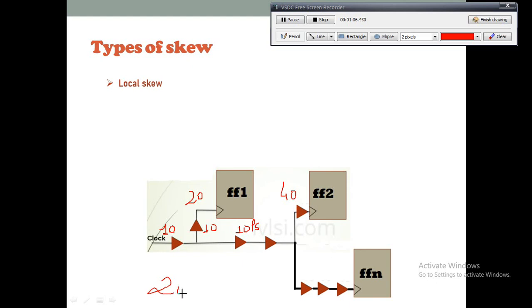So next, what is global skew? The clock latency difference between two non-related flip-flops. Suppose this is FF1 and FFn, these are the two non-related flip-flops. So the difference between the two non-related flip-flops, or the difference between the longest clock path and the shortest clock path in a design, is called global skew.